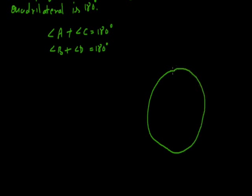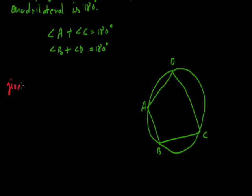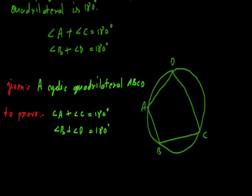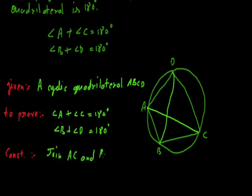We are given a cyclic quadrilateral ABCD. We have to prove that angle A plus angle C equals 180 degrees, as well as angle B plus angle D equals 180 degrees. For the construction, we simply join AC and BD.